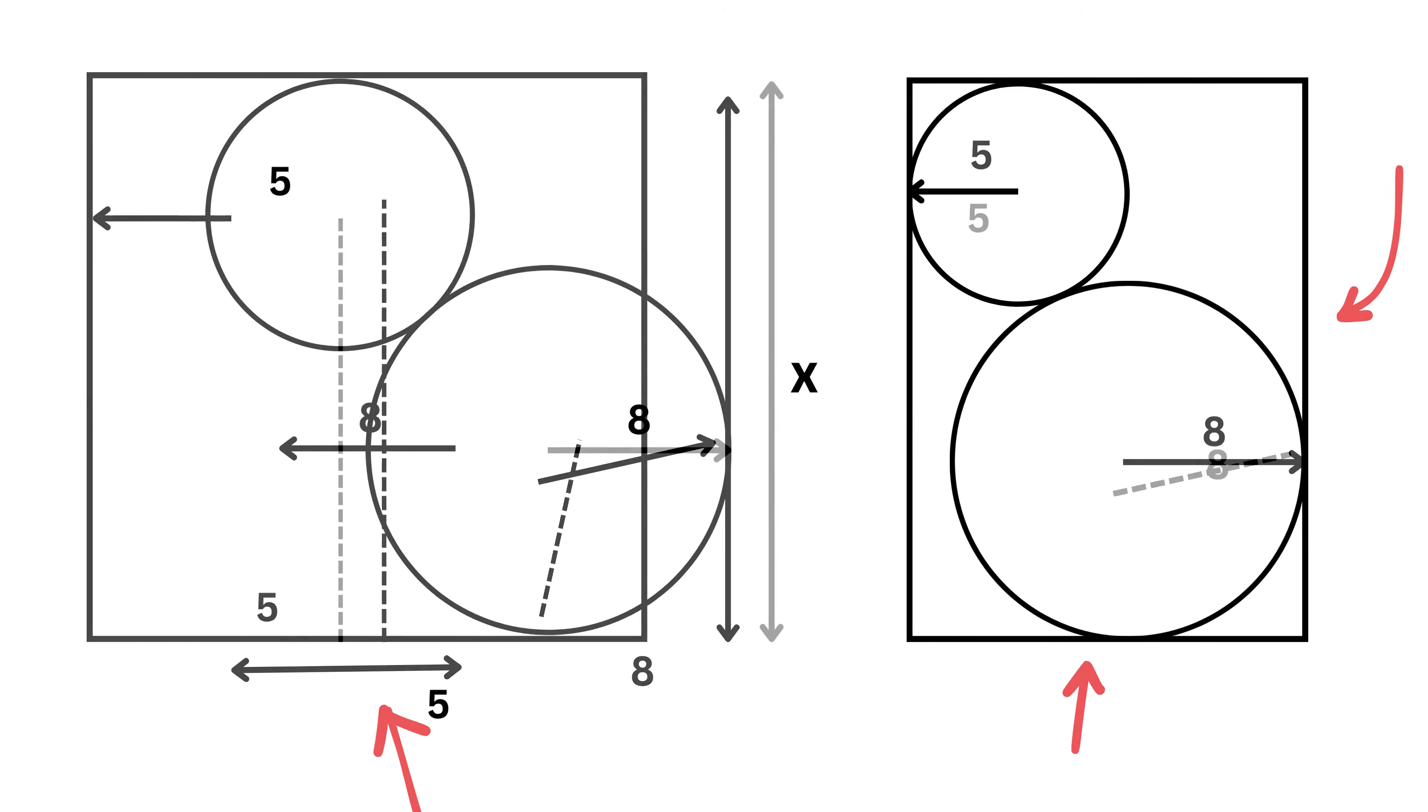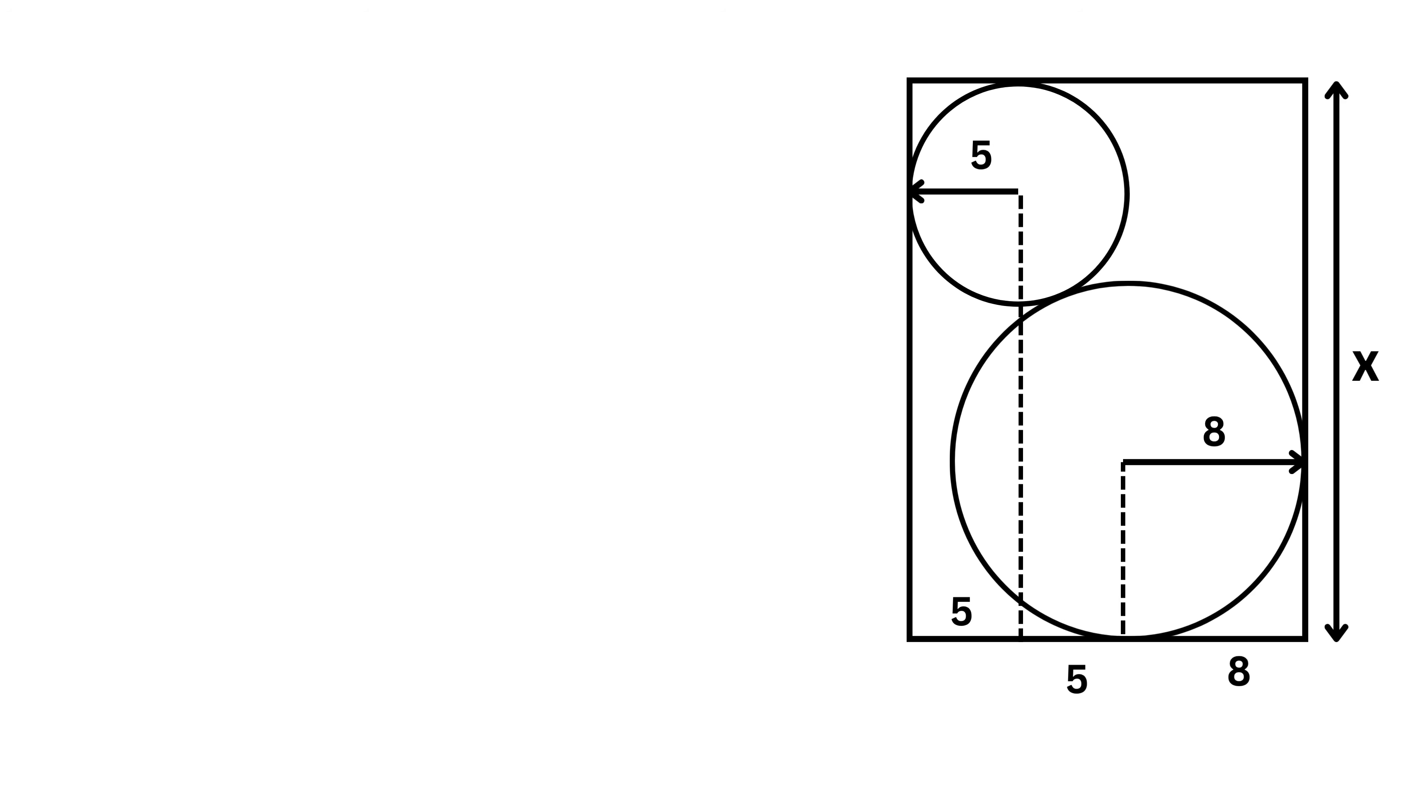Shift everything from this figure to this figure. Now draw a horizontal line from the center of this 8-unit radius circle like this. Label this piece as Y. This is the same as the radius of this circle, and thus it will be 5. And similarly, this will be 8. So we have X equals 5 plus Y plus 8 or 13 plus Y.